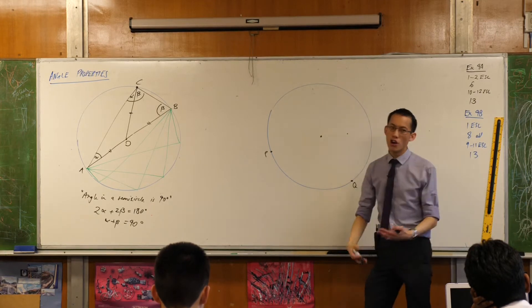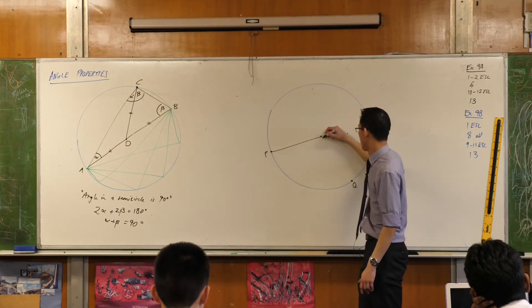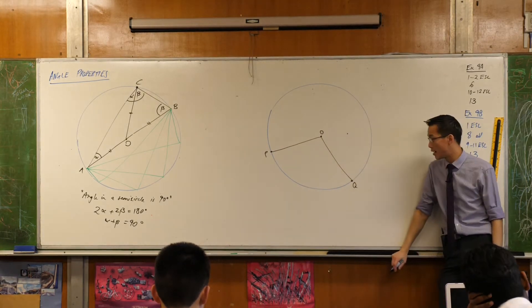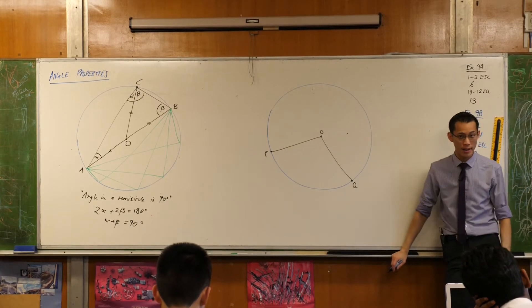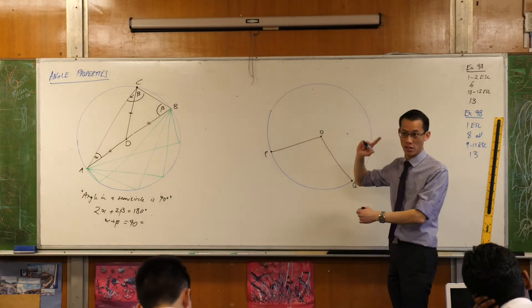So for instance, you can only subtend one angle at the center because the center is only in one spot. So there you go. I just subtended angle POQ. It's been subtended by arc PQ. There it is. There's only one.